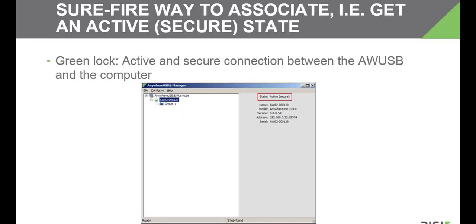In order for a host computer to be able to connect to an Anywhere USB Plus and use any attached USB devices, it must first be what we call associated with the Anywhere USB Plus. Association means there is a secure, authenticated, and encrypted connection between the host computer and the Anywhere USB Plus, and it's evident from seeing a green icon next to the Anywhere USB Plus within the Anywhere USB Manager.